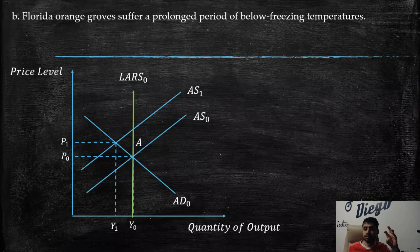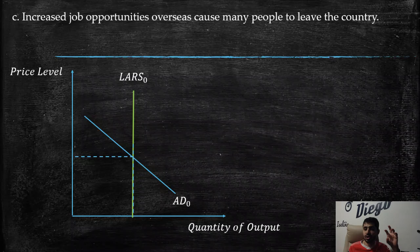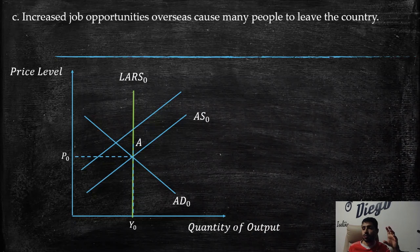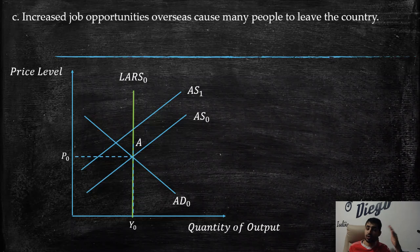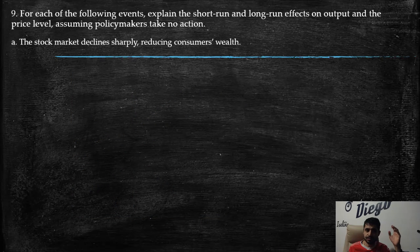Part c: Increased job opportunities overseas cause many people to leave the country. We are losing a factor of production, so aggregate supply moves to the left. The long-run aggregate supply may shift as well, but we are representing the short-run impact here — resulting in higher prices and lower quantity produced.